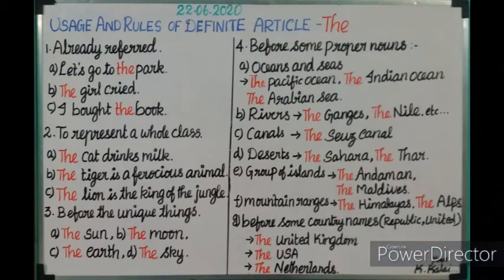The third rule is clear — before unique things, special and one-of-a-kind things, we use the definite article 'the.' Next, fourth rule: before some proper nouns. You all know proper nouns — they specify a particular person, place, or thing.